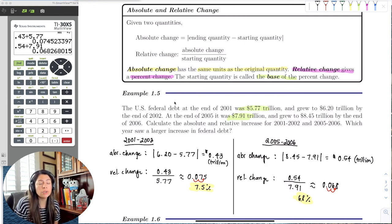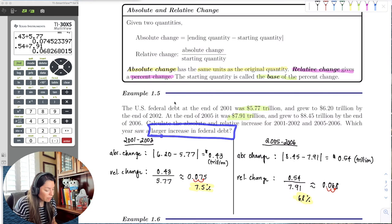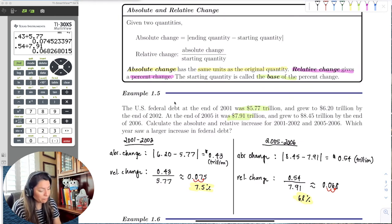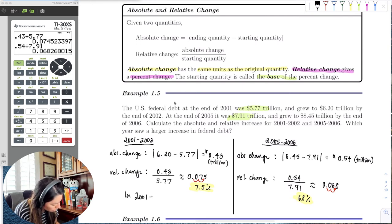there was a larger percent increase in 2001-2002. So when it says which year saw a larger increase in federal debt, the increase part has to be in 2001-2002. So our deficit actually got better in 2005 and 2006. So here we would say that in 2001-2002, we saw a larger increase in federal debt.